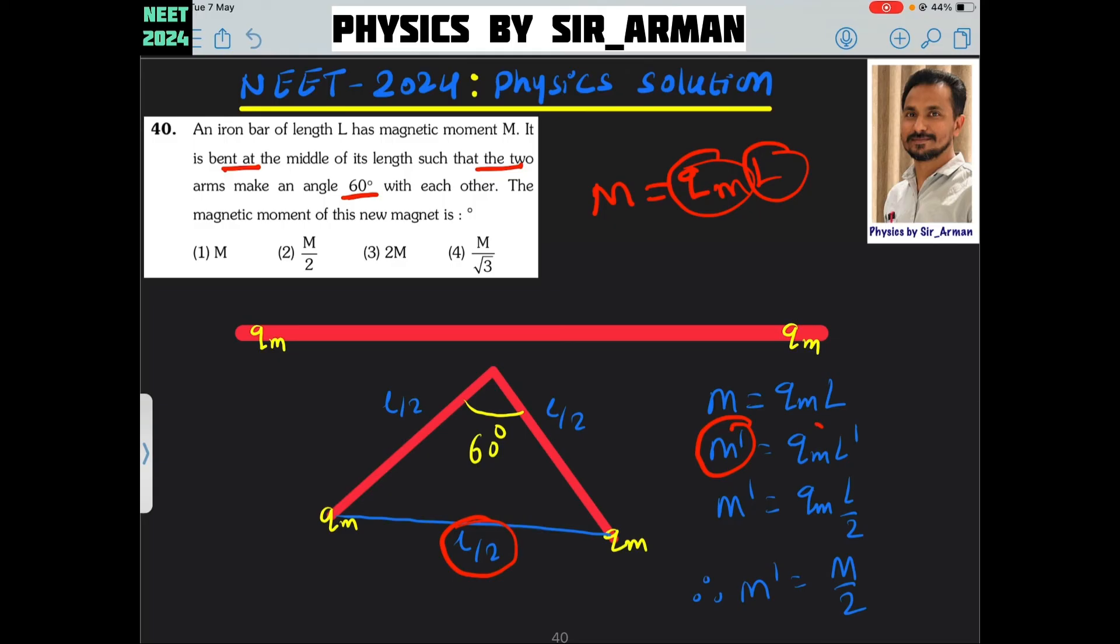New magnetic moment will be Q M because pole strength remains same, but the separation between the two poles is now become L by 2. So, it is Q M into L by 2. Now, Q M L is nothing but the original magnetic moment. So, it becomes M by 2.